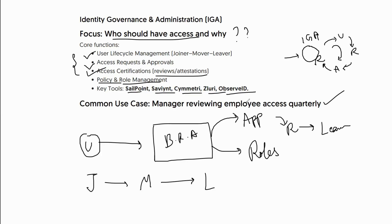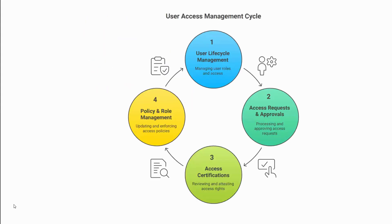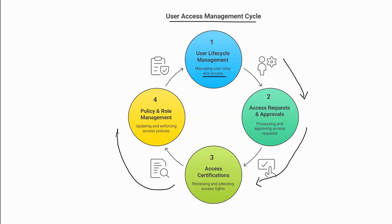To recap IGA: it covers identity lifecycle management, user lifecycle management, managing user roles and access, performing access requests and approvals, reviewing access through access certifications, and enforcing all of this through policy and role management. From the time a user joins to when they leave — this is where IGA plays a major role.